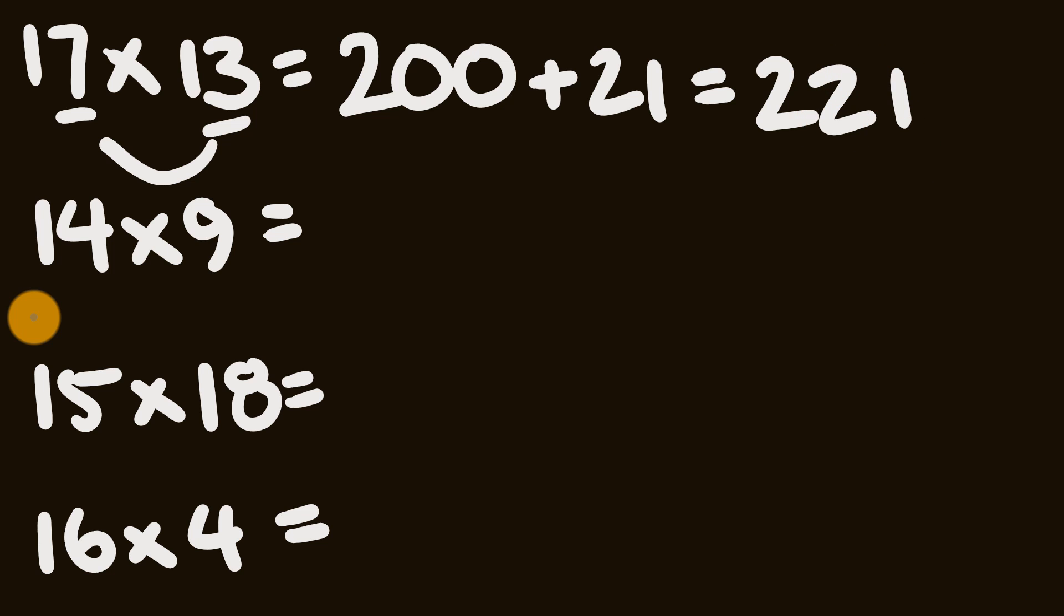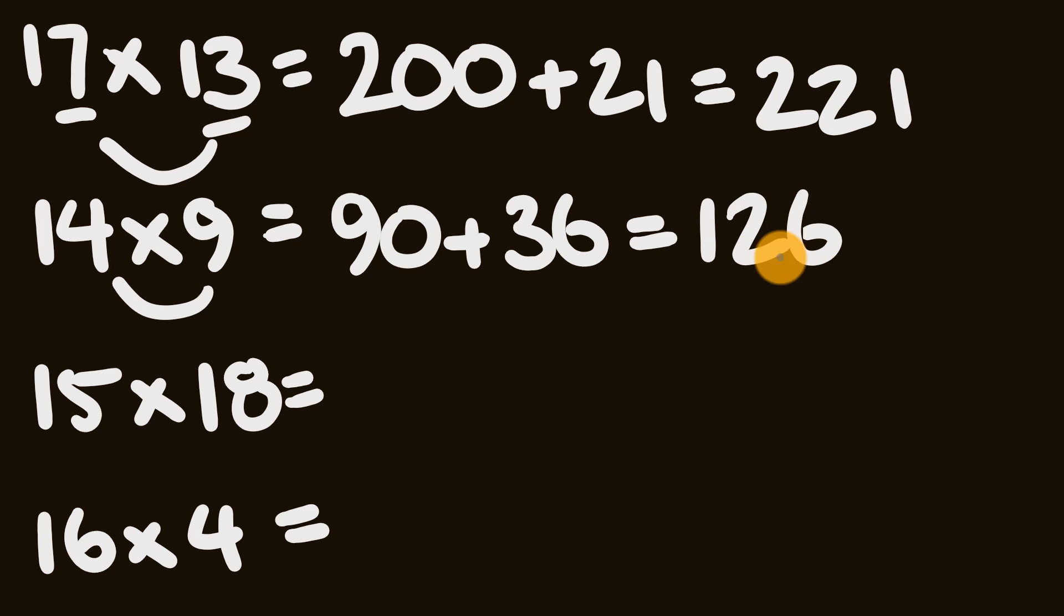Pretty fast, right? So let's have a look at the next one: 14 multiplied by 9. First off we have 10 times 9, which is 90, and to that we're going to add 4 times 9. 4 times 9 is 36. We end up with 126.